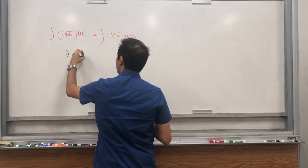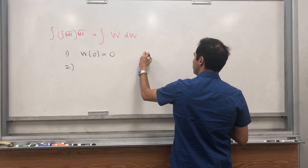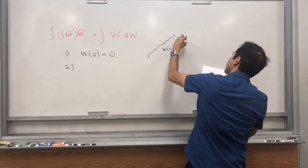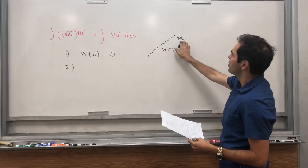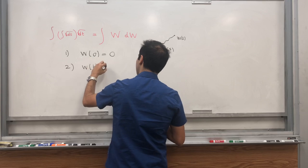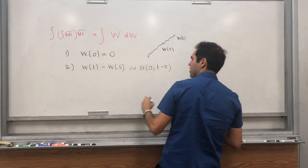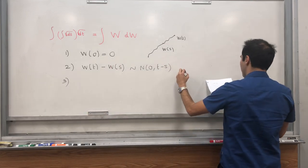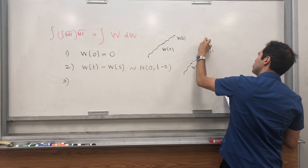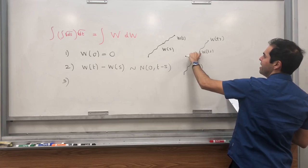So it starts at 0. And moreover, suppose you go to t and then you go to s to get w_s, and then you get w_t — then if t is close to s, what this is saying is that w_t is not much further than w_s. And in particular, the way to write it here is we assume the increments are normally distributed. So w_t minus w_s follows a normal law.